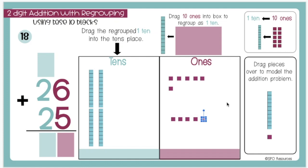I will drag 10 1s that need to be regrouped up to the box. Then I will drag a 10 into the 10s place to show the 10 1s regrouped as 1 10.